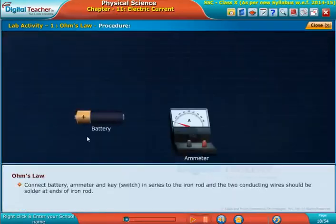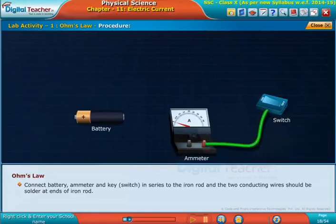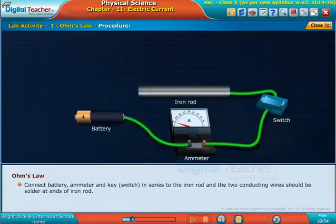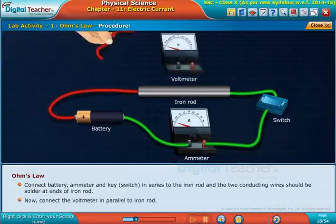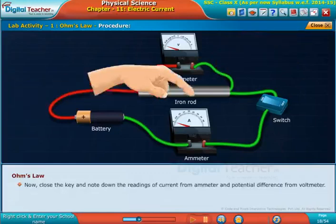Connect battery, ammeter, and key (that is, switch) in series to the iron rod. The two conducting wires should be soldered at ends of iron rod. Now connect the voltmeter in parallel to iron rod.